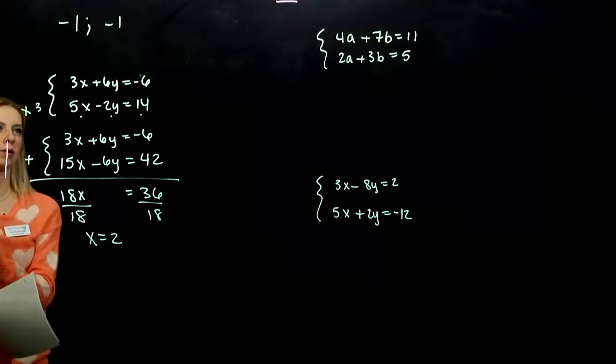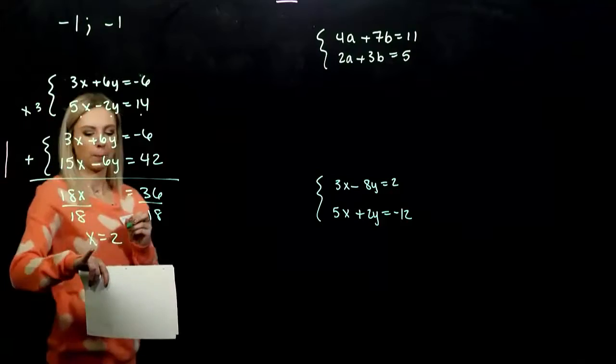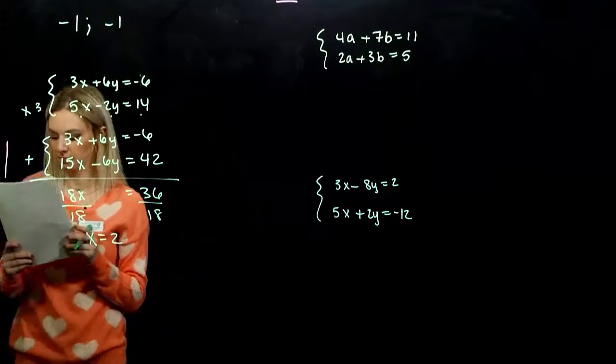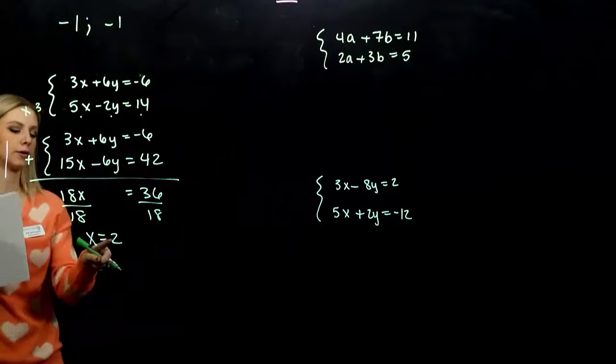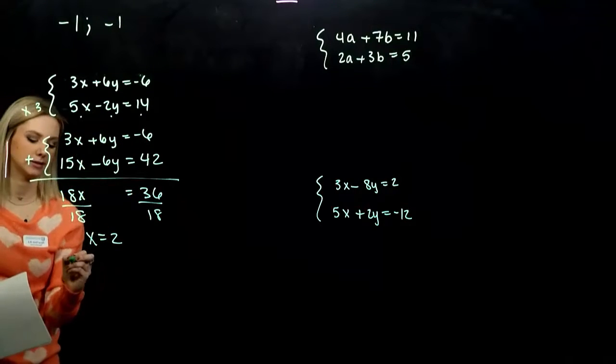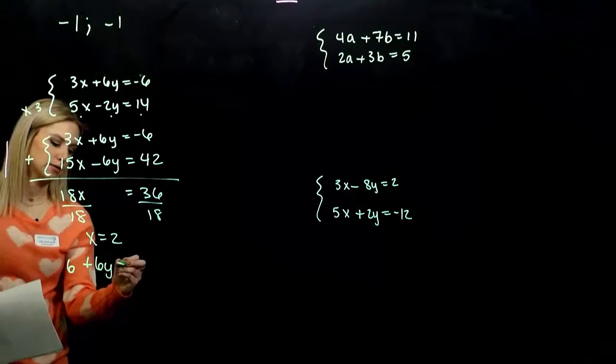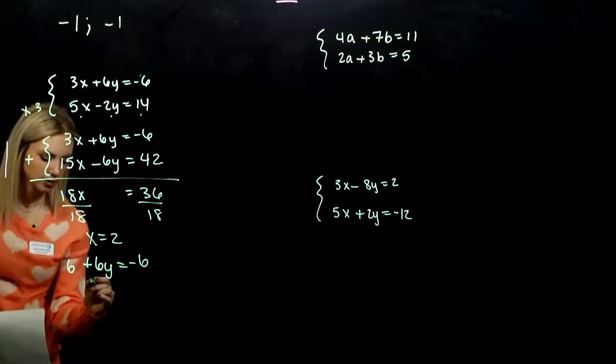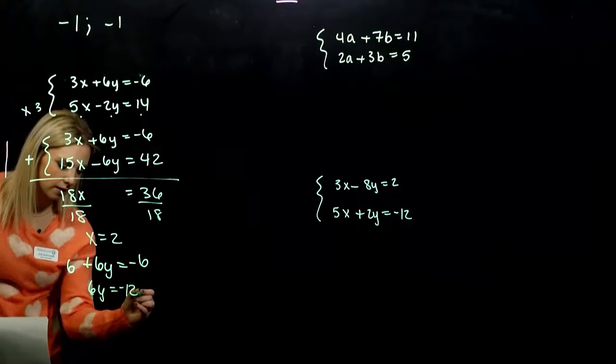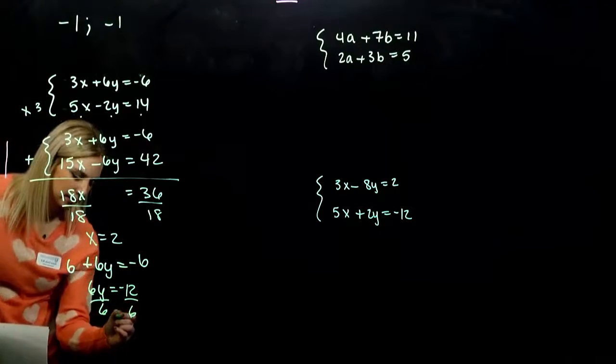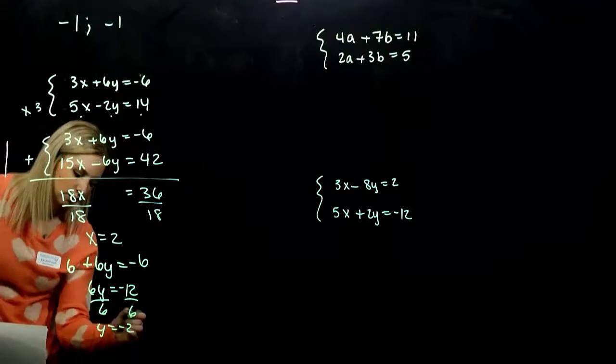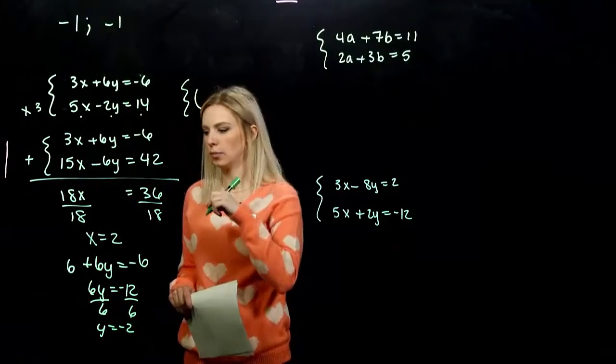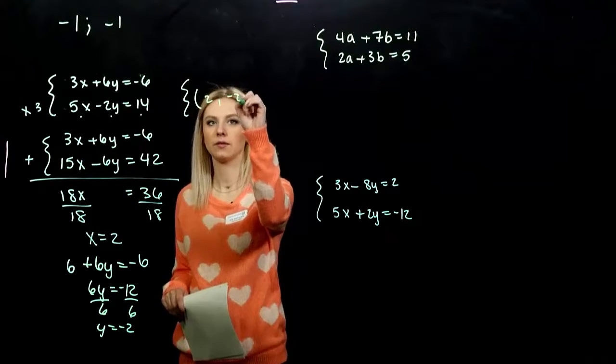So we solved for one of our variables. We also need to solve for Y. We can plug it back into any of them. I'm going to plug it into the first. So 2 times 3 will give me 6 plus 6Y is equal to negative 6. So how many 6s? So if I subtract 6, I'm looking at negative 12. Divide, Y is negative 2.